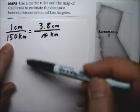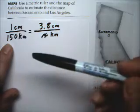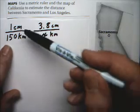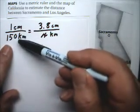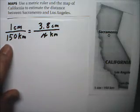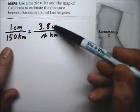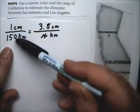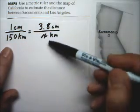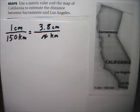If you measured 2 centimeters on the map, it'd be 300 kilometers. 3 centimeters would be 450 kilometers, and 4 centimeters would be 600 kilometers. So we should get an answer close to 600, because 3.8 is close to 4, and 4 times 150 is 600. We'll be expecting an answer a little bit smaller than 600.